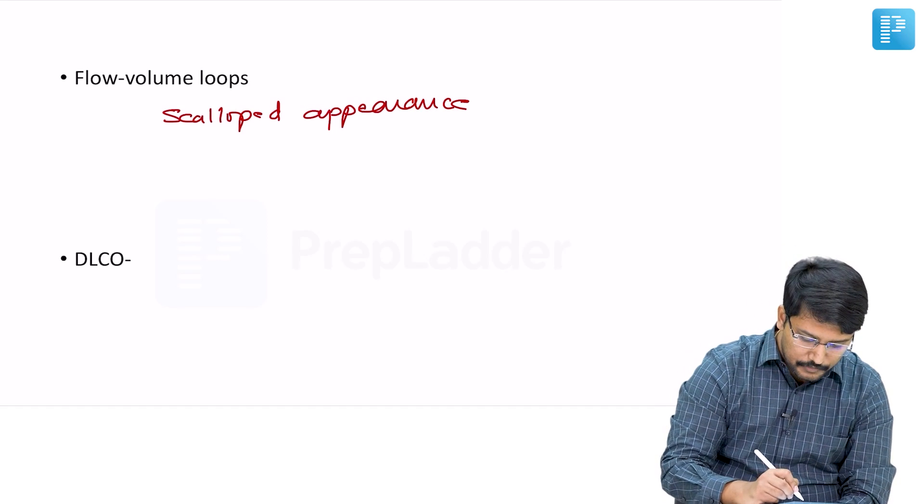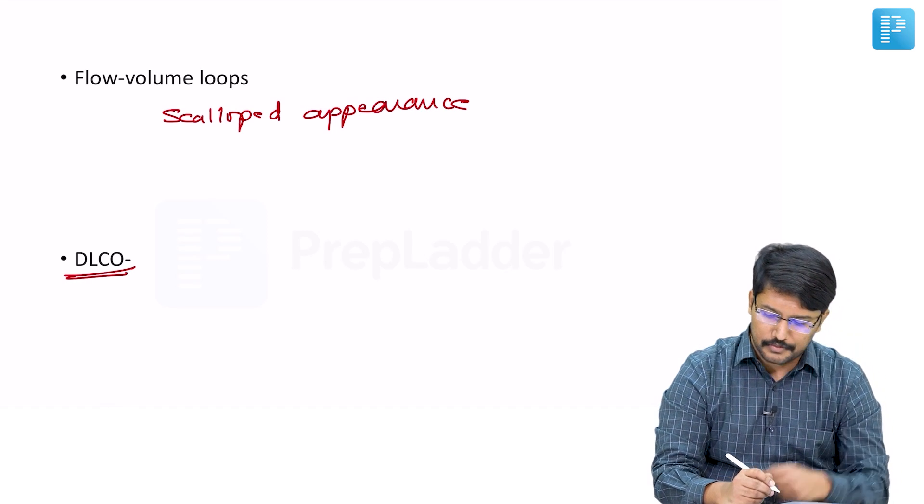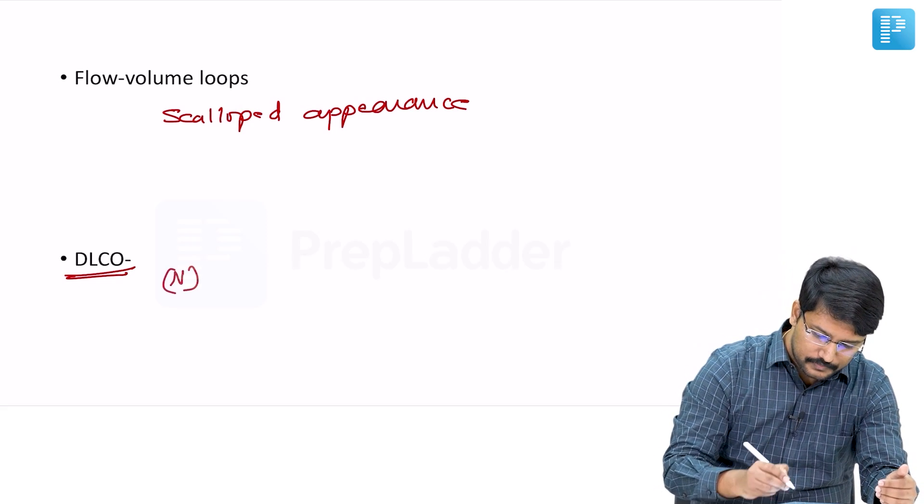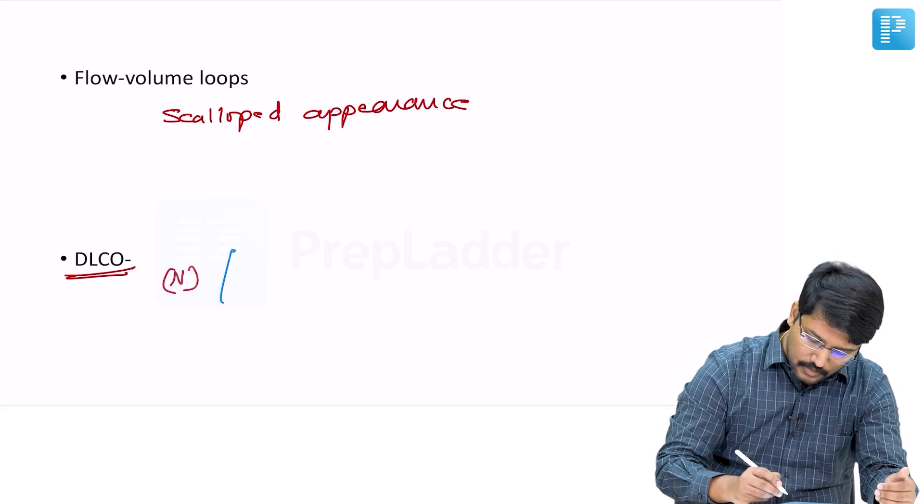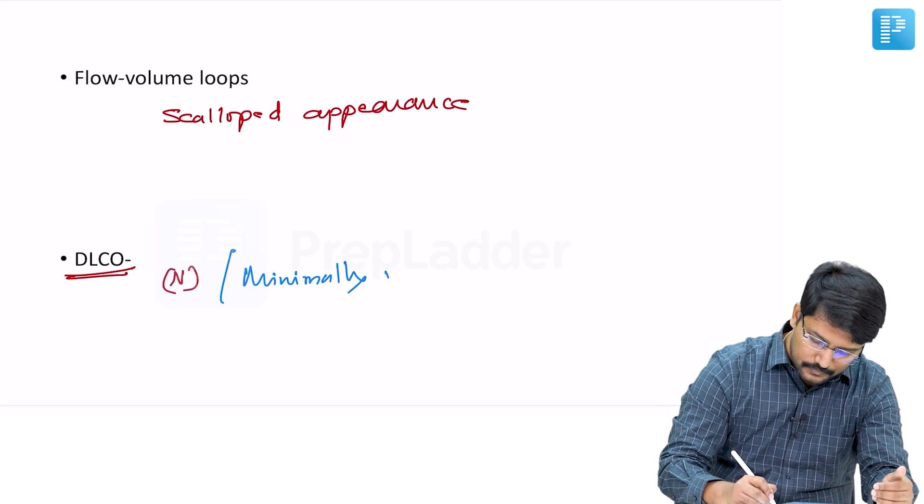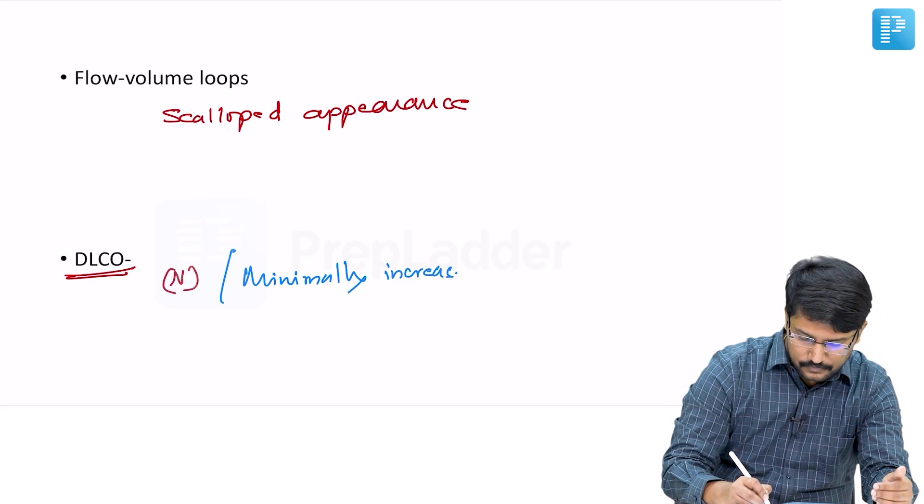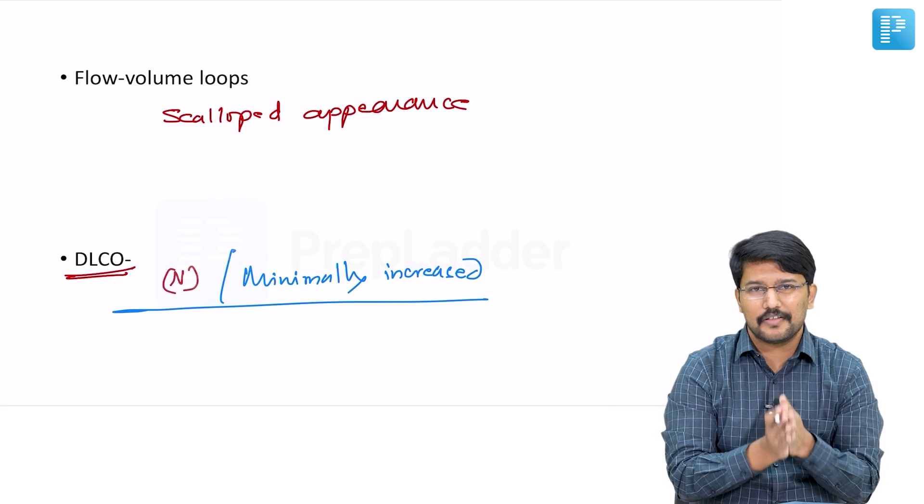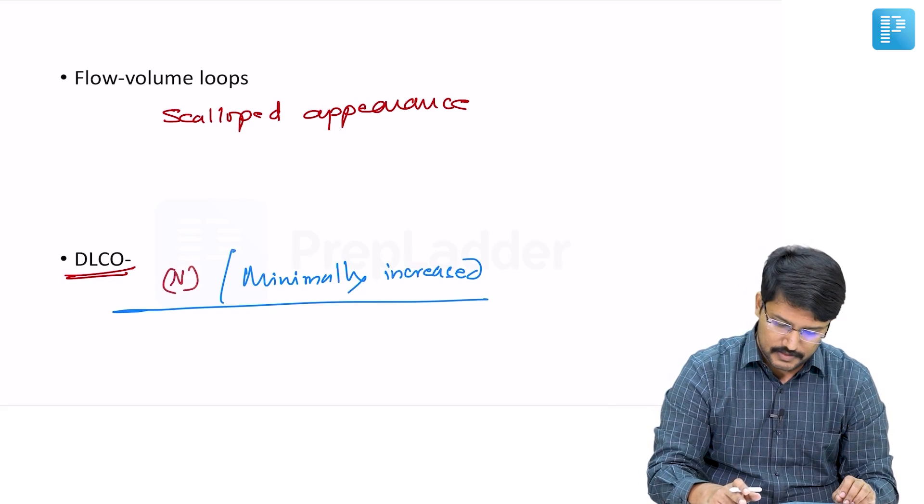Then if you see the gas diffusion, the DLCO in patients with bronchial asthma is either normal or minimally increased, as opposed to in patients with COPD.